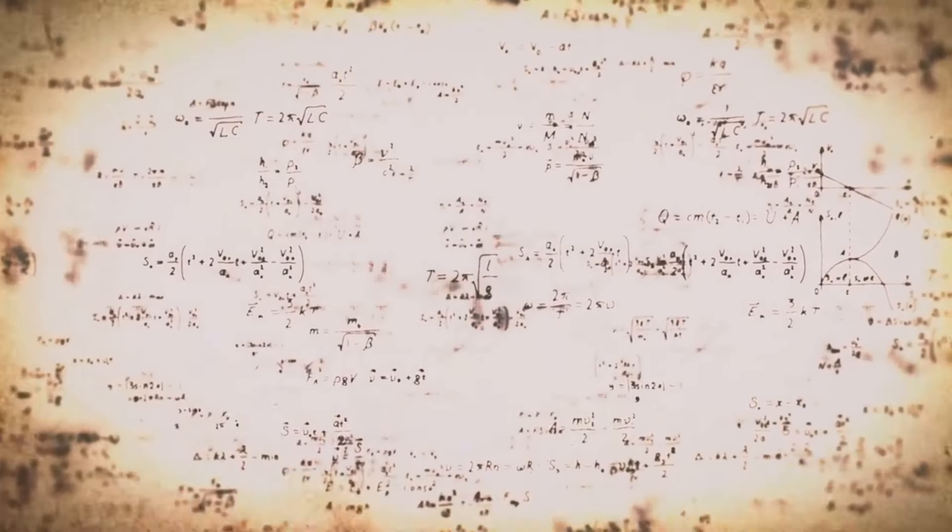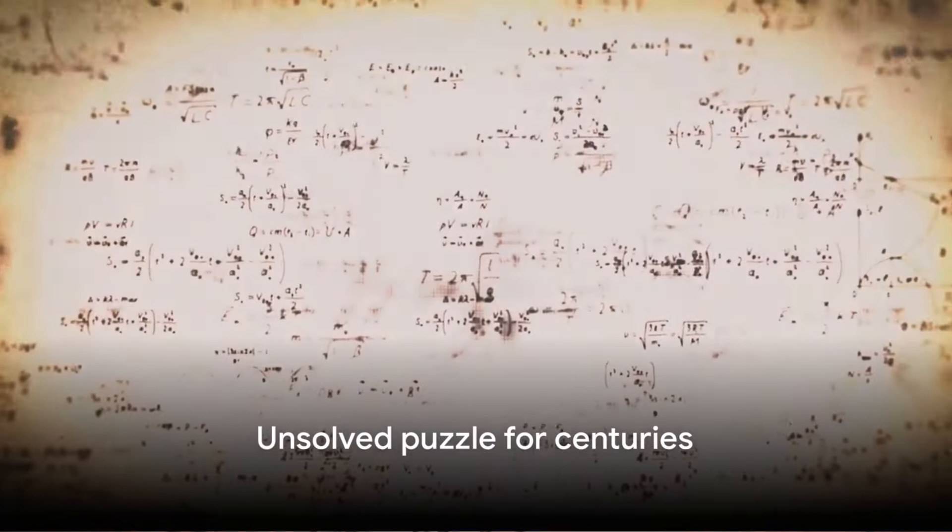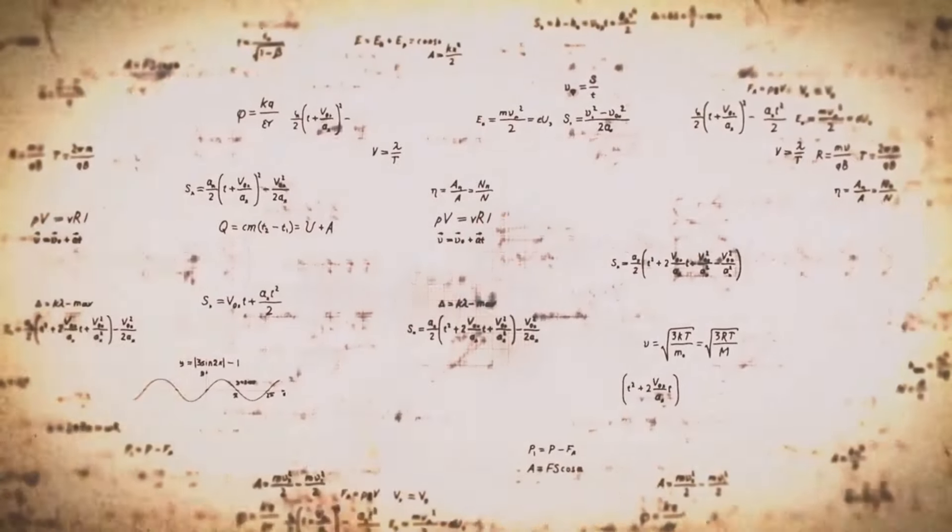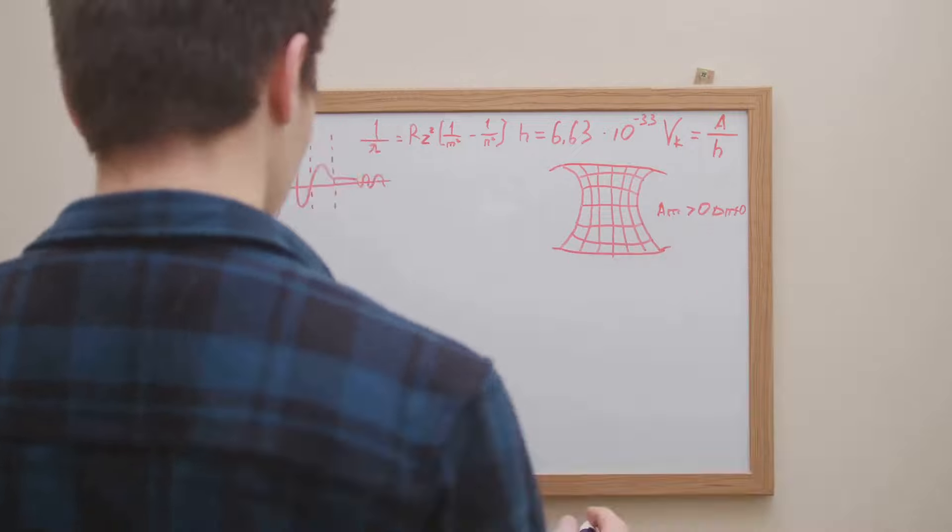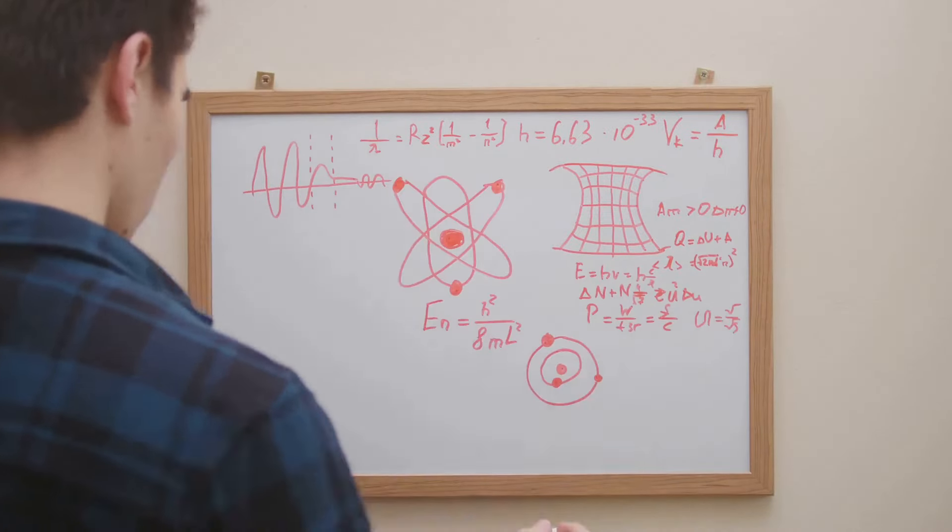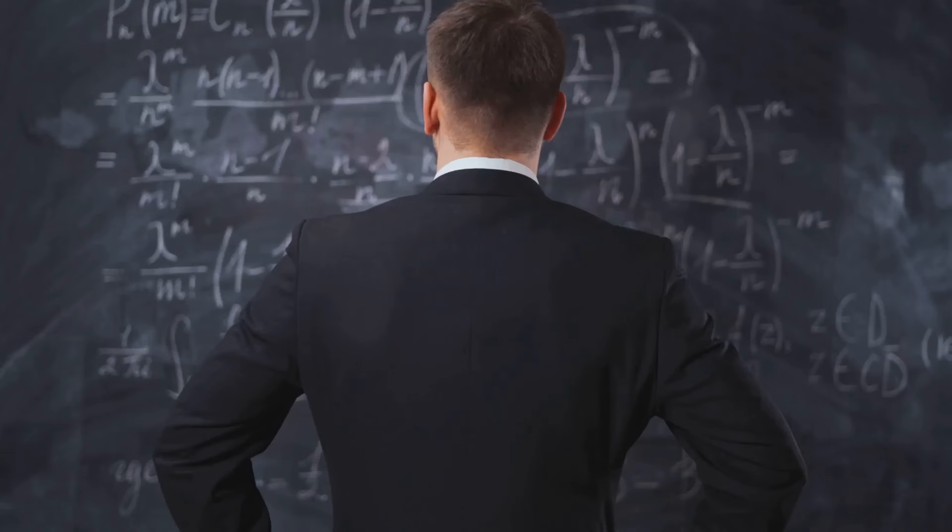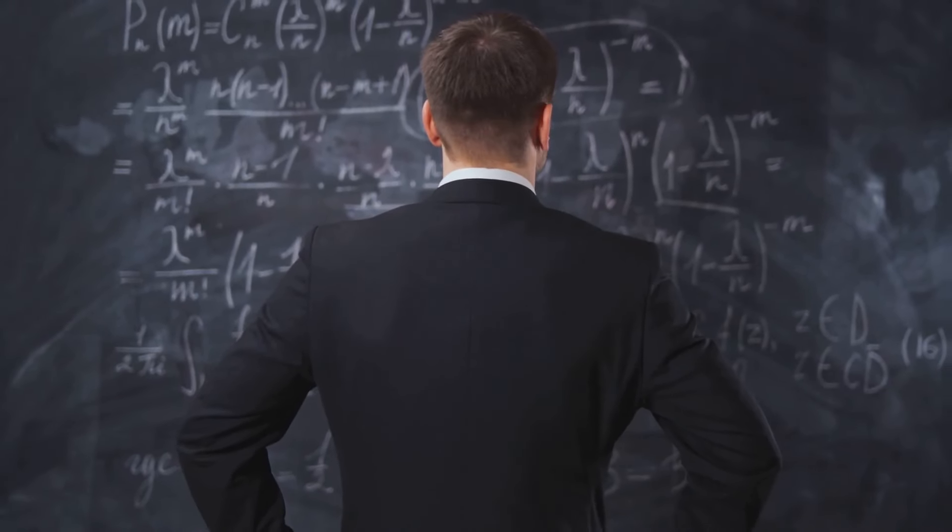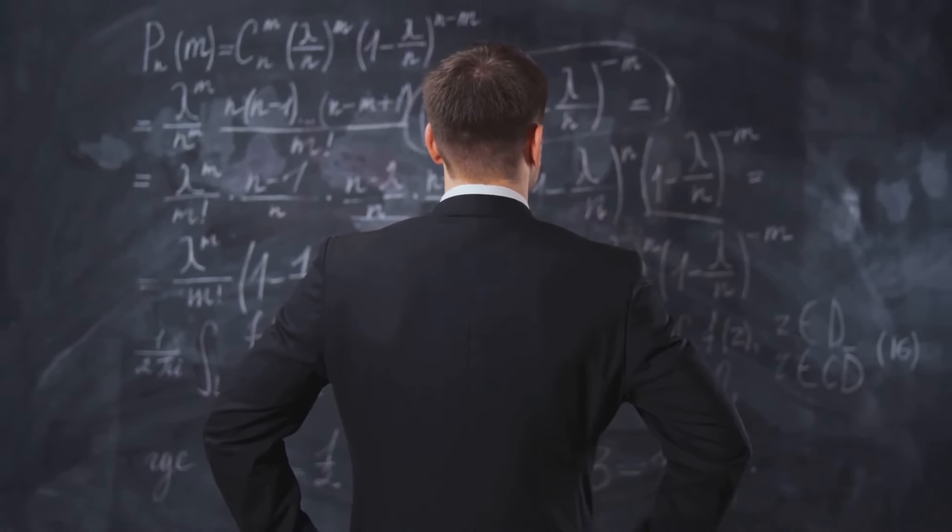This theorem, a cornerstone of mathematical history, remained an unsolved puzzle for centuries. Fermat's Last Theorem, in layman's terms, states that there are no three positive integers a, b, and c that satisfy the equation a^n + b^n = c^n for any integer value of n greater than 2.